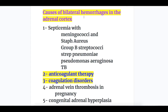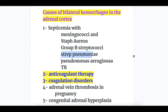Causes of bilateral hemorrhages in the adrenal cortex. Number one, septicemia — the most important organism causing septicemia is meningococci. Other organisms include Staph aureus, Group B Strep, Strep pneumoniae, Pseudomonas aeruginosa, and tuberculosis.